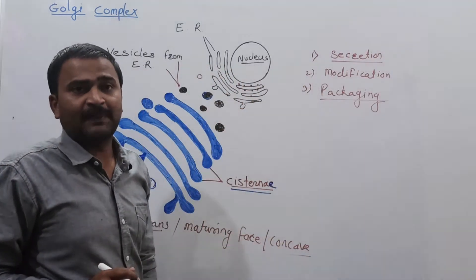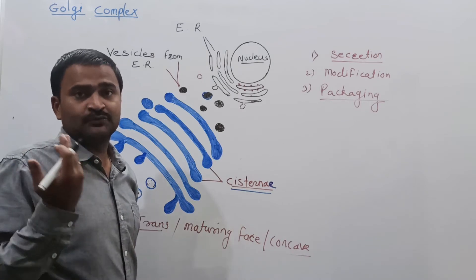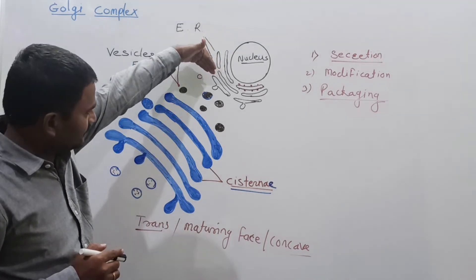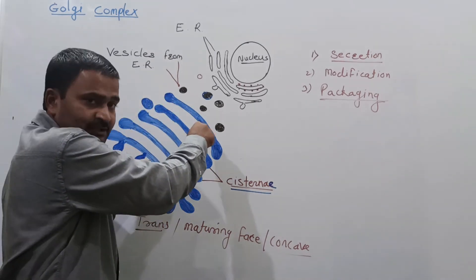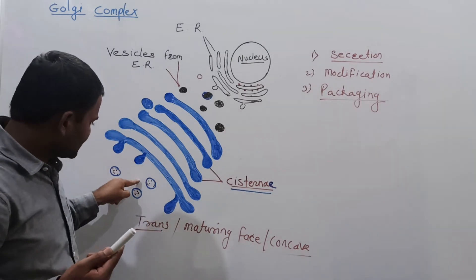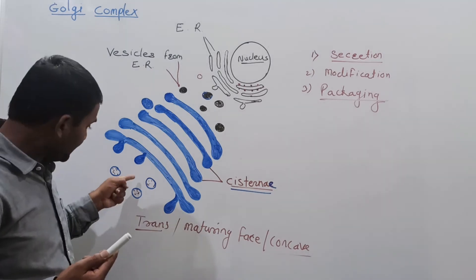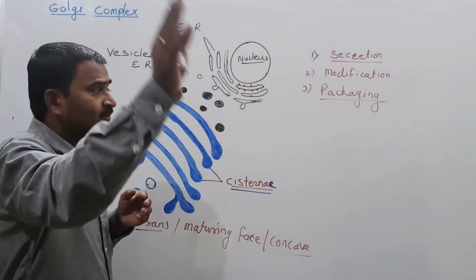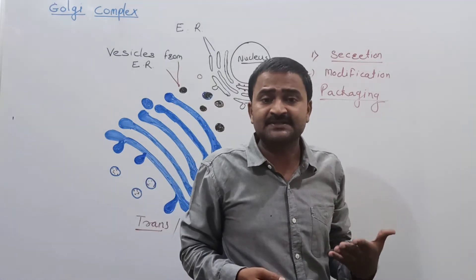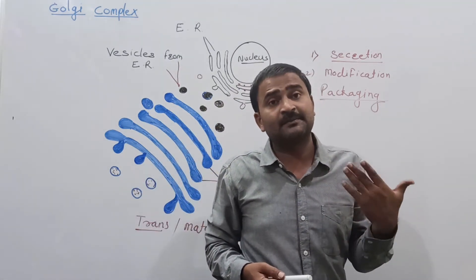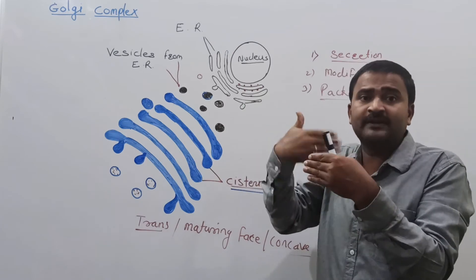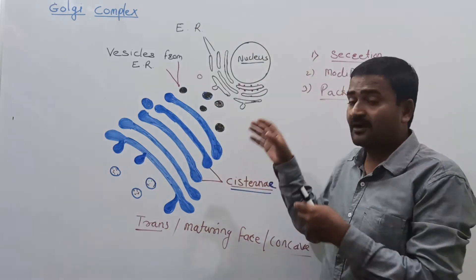The packaging of secretory substances is a very important function of the Golgi complex. The secretory material is packaged into vesicles, and these vesicles release the content at the cell membrane. This is how the Golgi complex helps in packaging the secretory material.